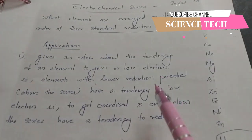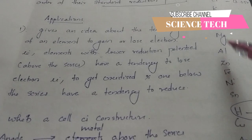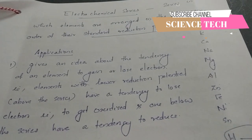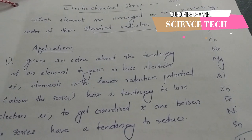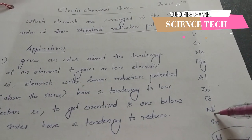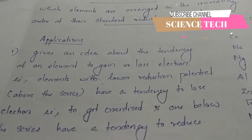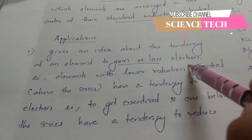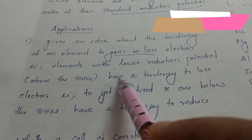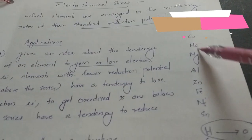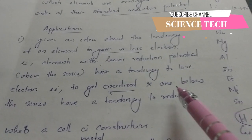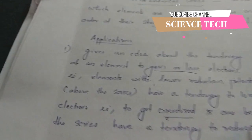If we ask this question, we have to answer about the electrochemical series. It gives an idea about the tendency of an element to gain or lose electrons. Elements with lower reduction potential, above in the series, have a tendency to lose electrons — that is, they get oxidized. Elements below the series have a tendency to reduce.